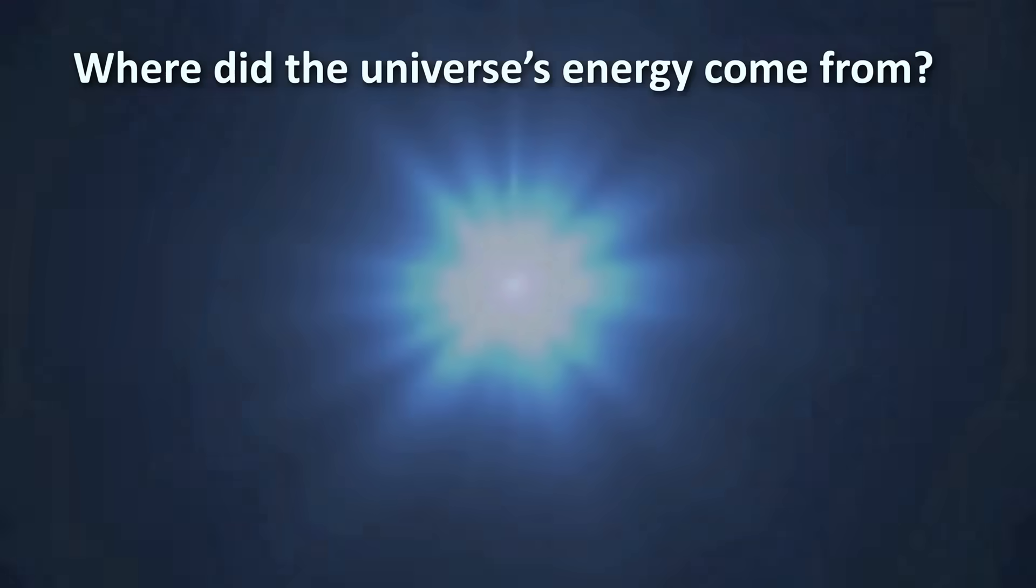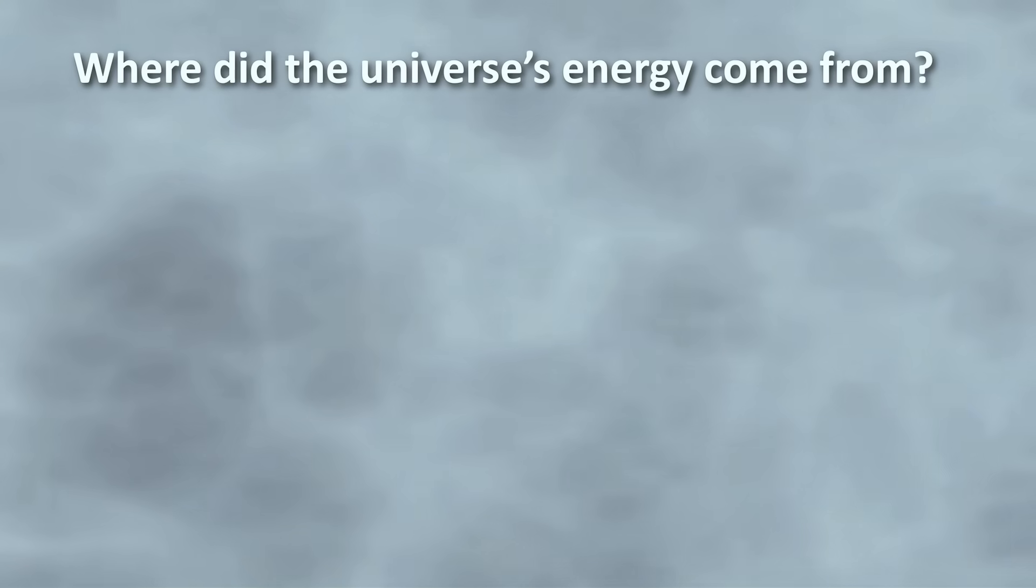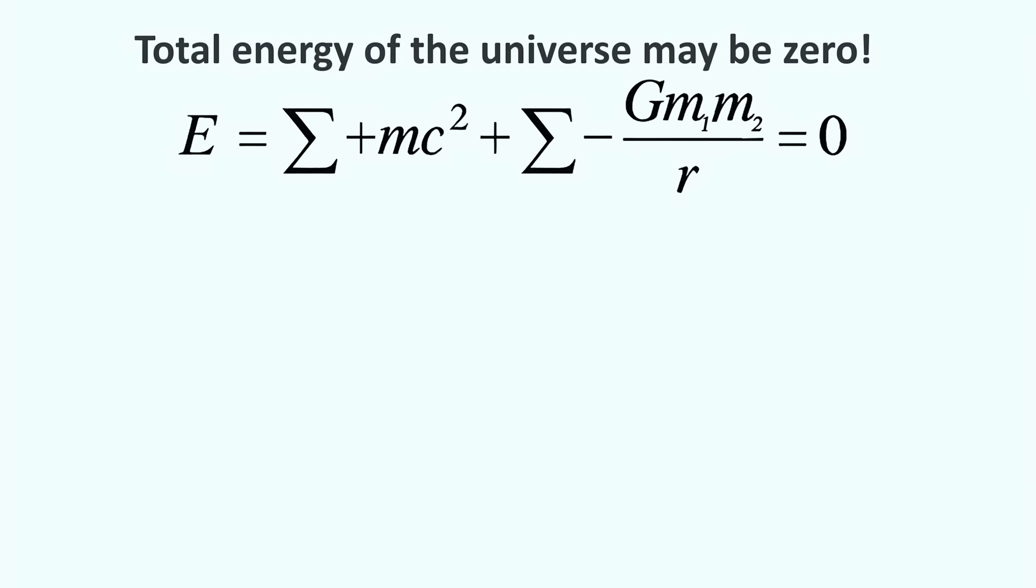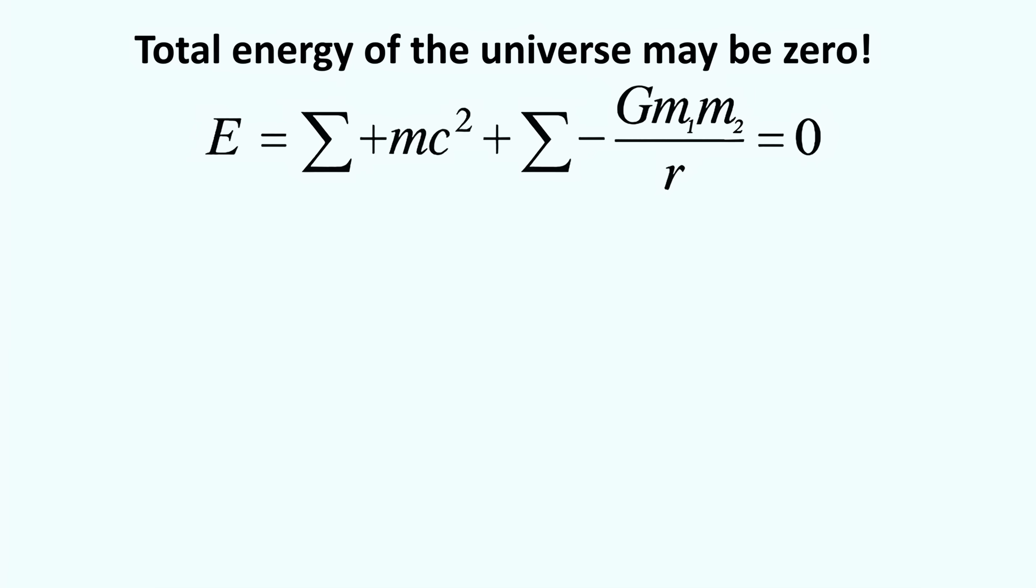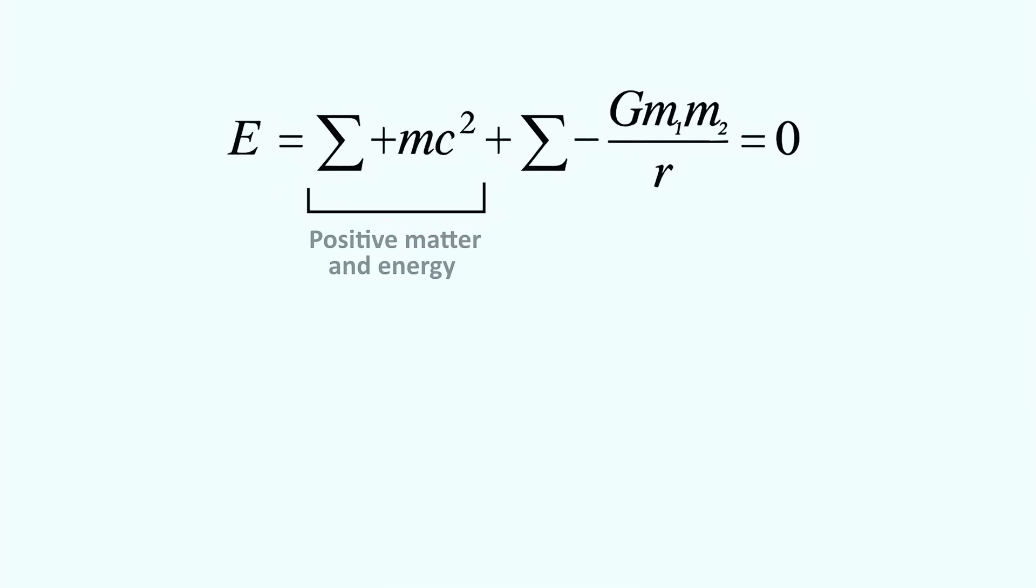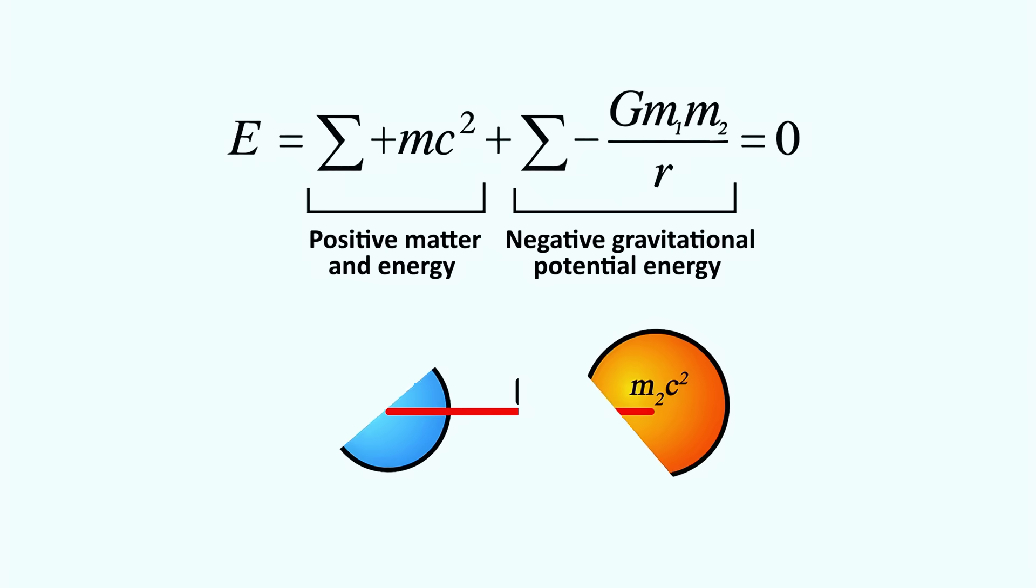You might ask, where did the universe's energy come from? Many cosmologists agree that the total energy can be effectively zero. Positive matter and radiation energy balanced perfectly by negative gravitational energy. There are models of the universe where such a total can be meaningfully defined.